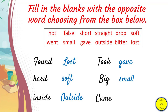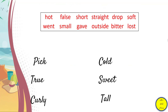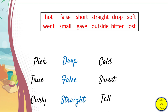Continuing with the opposites: 'big' and its opposite is 'small.' 'Came' and its opposite is 'went.' 'Pick' and its opposite is 'drop.' 'True' and its opposite is 'false.' 'Curly' and its opposite is 'straight.' 'Cold' and its opposite is 'hot.' 'Sweet' and its opposite is 'bitter.' And 'tall' and its opposite is 'short.' Those are all the opposite words in the exercise.